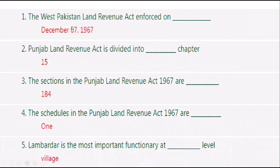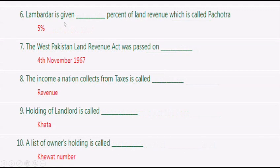The West Pakistan Land Revenue Act was enforced on 8 December 1967. The Punjab Land Revenue Act is divided into 15 chapters. The sections in the Punjab Land Revenue Act 1967 are 184. The schedules in the Punjab Land Revenue Act 1967 are one. Lumbardar is the most important functionary at the village level.